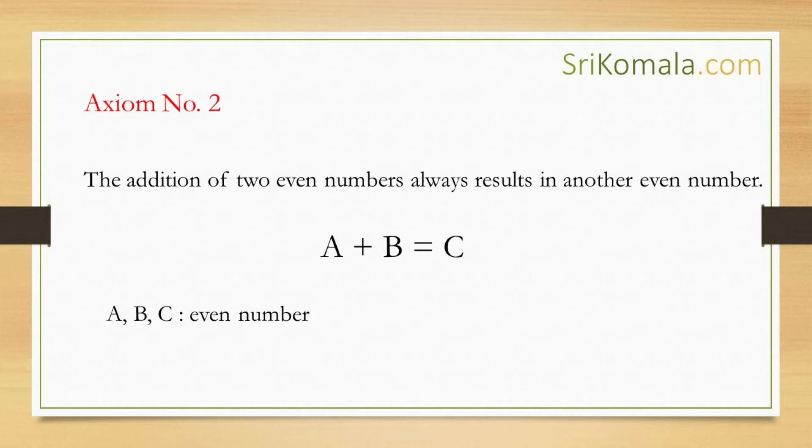Axiom number two: The addition of two even numbers always results in another even number. Mathematically, this can be expressed as follows. Let us take A and B as two different even numbers. Thus it can be stated that A plus B equals C. Here C is another even number. Those are the two axioms used by Euclid of Alexandria.